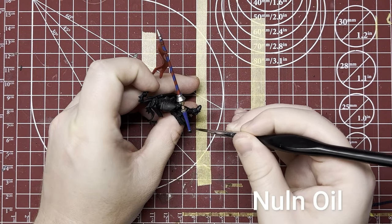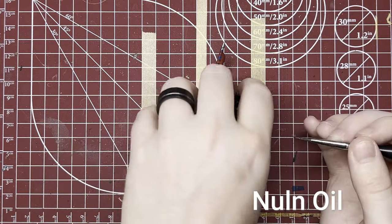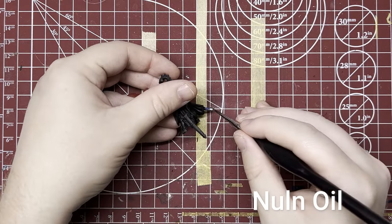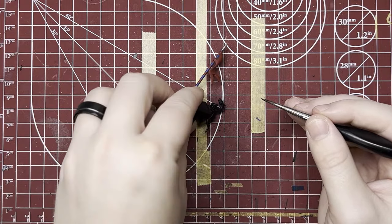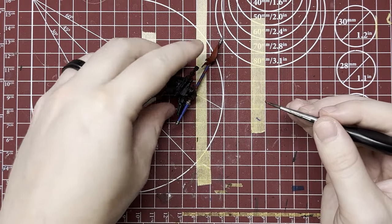Now I'm adding Nuln Oil to the metallics and at the edges of the banner to add a little depth and make it look a little bit more professional. Overall, Nuln Oil just helps make everything look nice.